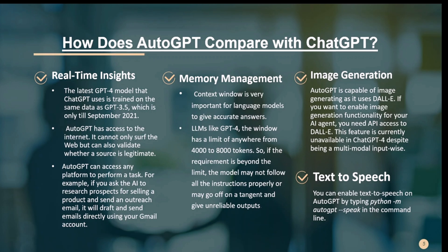On memory management: context window size is very important for large language models. In ChatGPT, the window size is limited to between 4,000 and 8,000 tokens, so if requirements exceed that limit, the model may not follow all instructions properly or may give unreliable outputs. In contrast, Auto-GPT handles both short-term and long-term memory management using vector databases — such as Pinecone — allowing the model to store context from previous experiences and make better decisions.